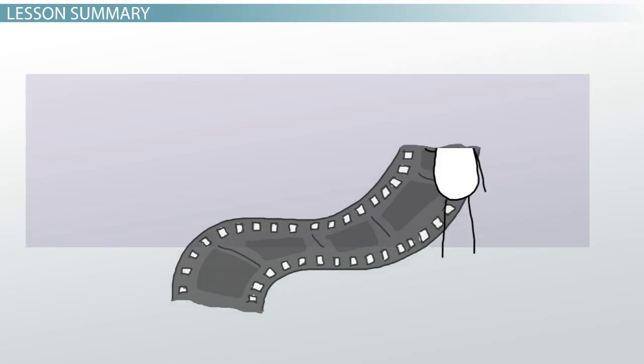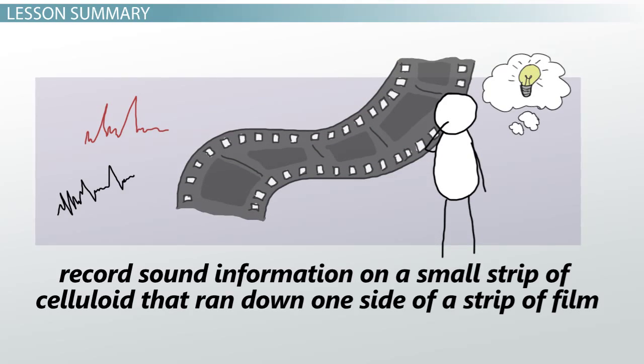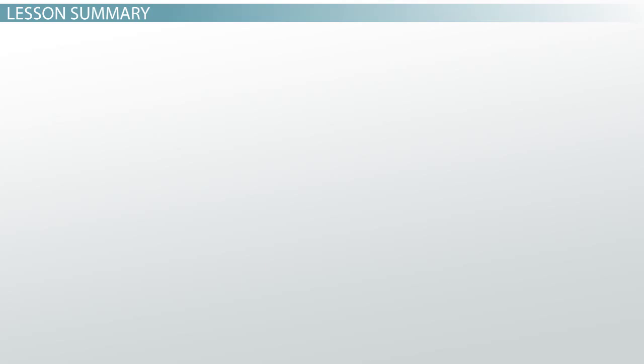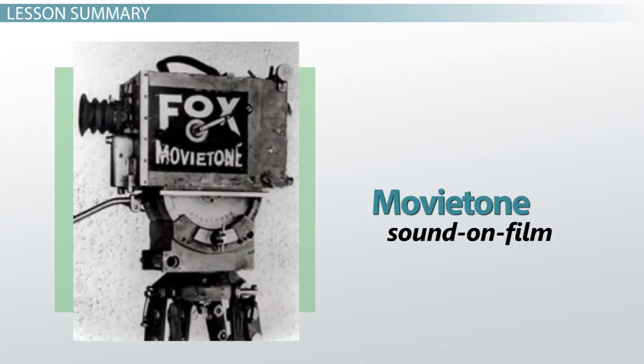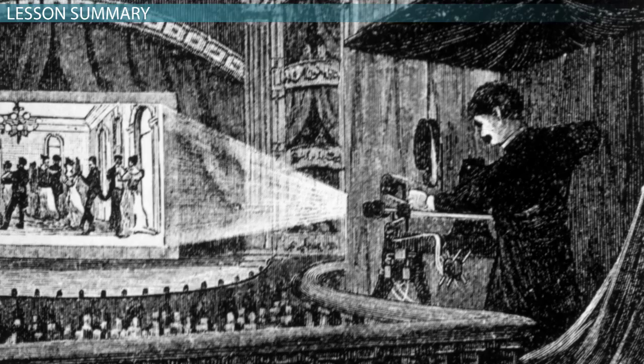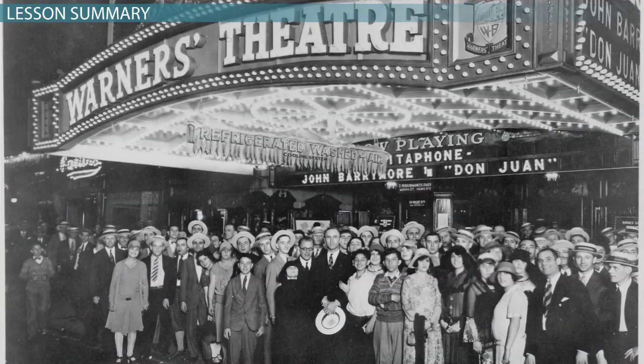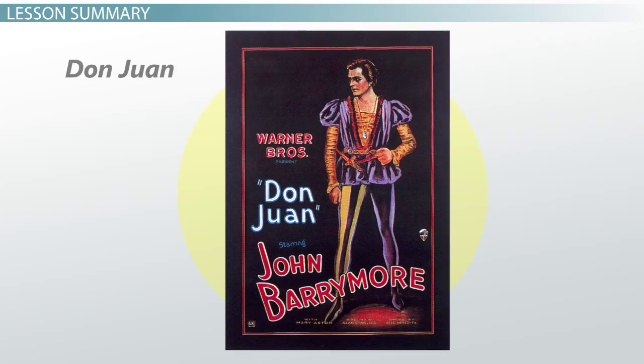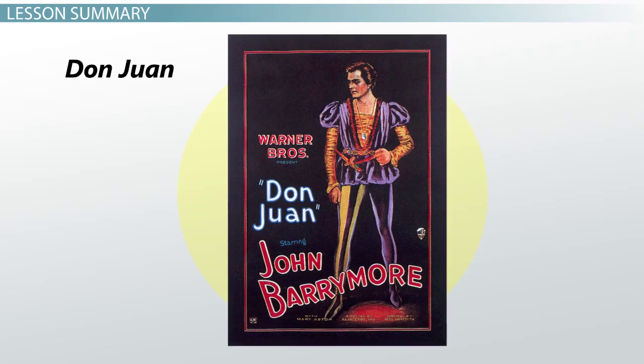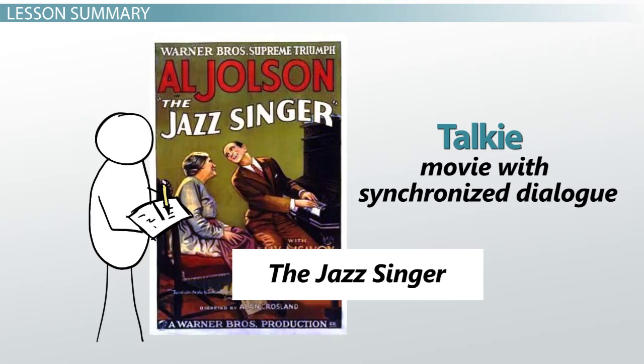A short time later, inventors discovered that they could record sound information on a small strip of celluloid that ran down one side of a strip of film. This process, called sound-on-film, or movietone, allowed the picture and the sound to play together in perfect synchronization, at least in theory. Movie studios quickly began releasing movies with sound, including Don Juan in 1926, which featured a sound-on-disc musical soundtrack, and The Jazz Singer, the first feature-length talkie with synchronized songs and dialogue.